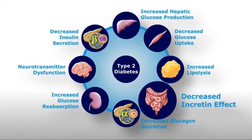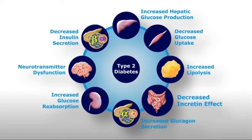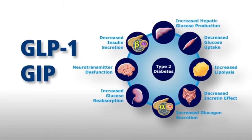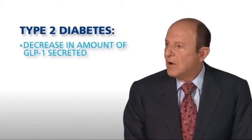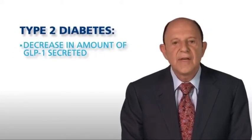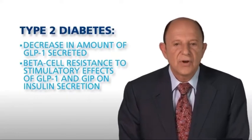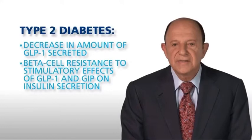We have come to recognize that the gut is a major endocrine organ, as shown at the lower right. In response to food intake, the gut releases two very important incretin hormones. One is glucagon-like peptide 1, or GLP-1, and the other is glucose-dependent insulinotrophic polypeptide, referred to as GIP. These two incretin hormones are responsible for about 70% of the insulin that is secreted in people without diabetes in response to a typical meal. We know that in patients with type 2 diabetes, there is a modest decrease in the amount of GLP-1 that is secreted, and more importantly, the beta cells are severely resistant to the stimulatory effects of GLP-1 and GIP, thus reducing insulin secretion.